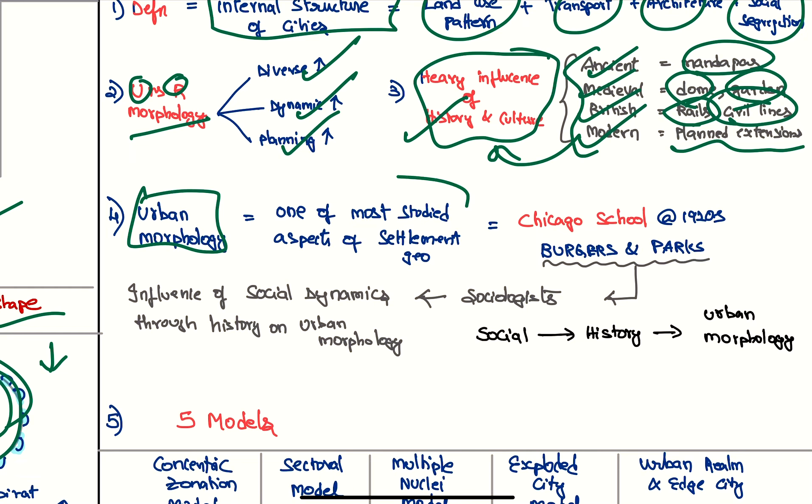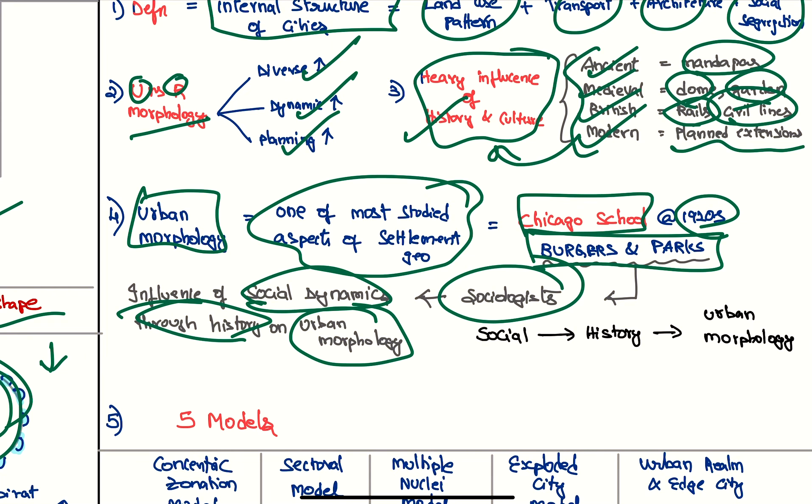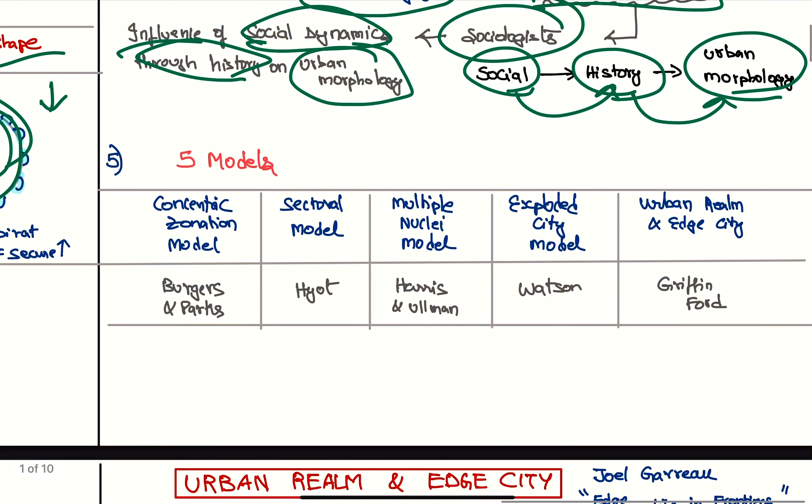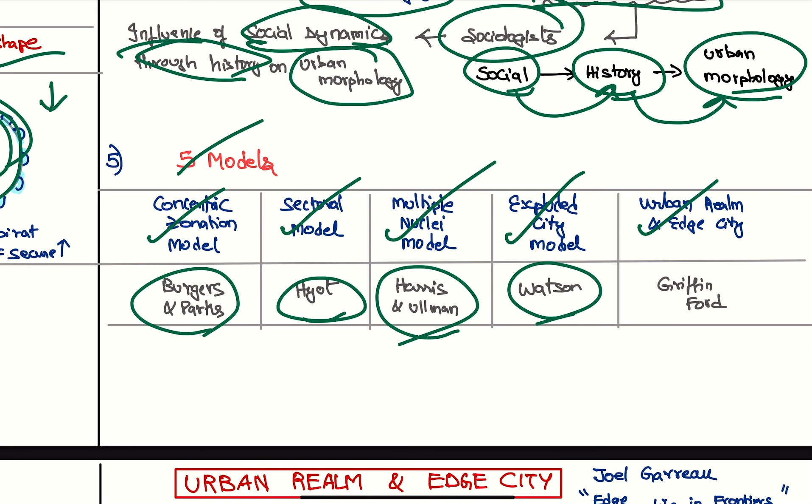Urban morphology is one of the most studied aspects of settlement geography, especially in Chicago School in 1920s. Burgess and Park—they were sociologists who told about the influence of social dynamics through history on urban morphology. That is, social conditions manipulate the history, which in turn affects how the urban morphology is. We have five models in urban morphology: concentric zonation model by Burgess and Park, sectoral model by Hoyt, multiple nuclei model by Harris and Ullman, exploded city model by Watson, and urban realm or city model by Griffin and Ford.